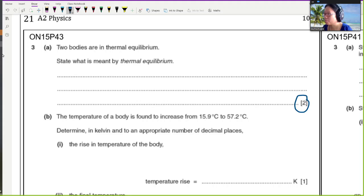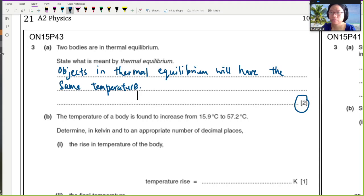So objects in thermal equilibrium will have the same temperature. Okay, so if you have two objects, they are in thermal contact or they are touching each other and they have the same temperature, we can deduce that they are in thermal equilibrium. And the second point here is that objects in thermal equilibrium have no net transfer of heat or thermal energy between the bodies.